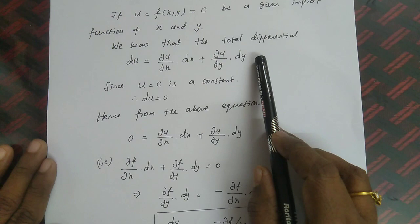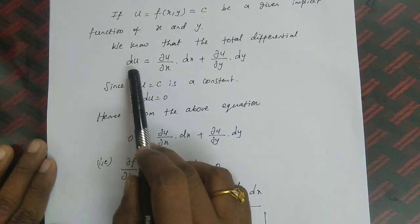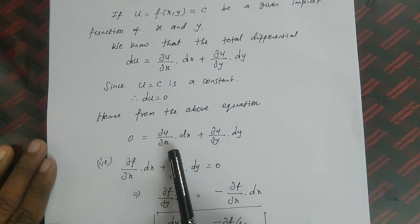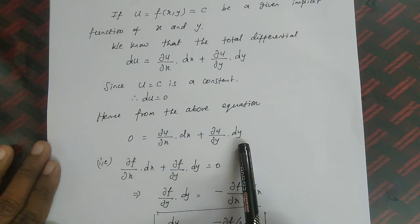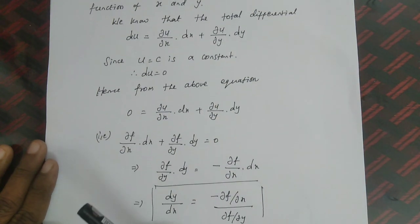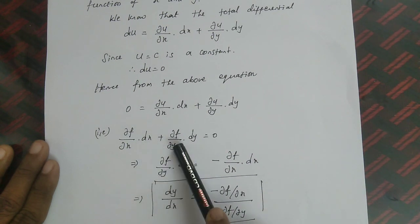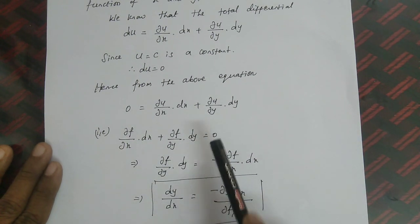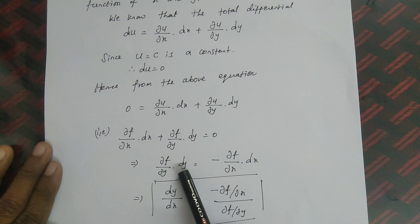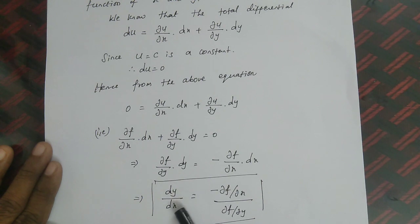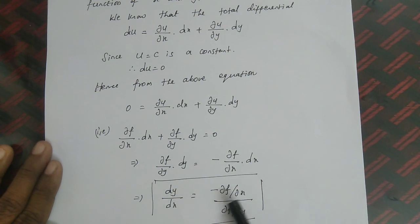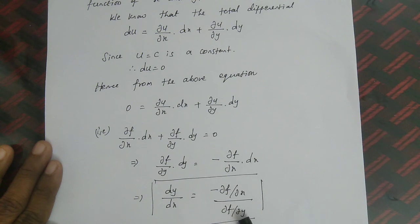Hence from the above equation, du = 0 = (∂u/∂x)dx + (∂u/∂y)dy, that is (∂f/∂x)dx + (∂f/∂y)dy = 0, which implies (∂f/∂y)dy = -(∂f/∂x)dx, that is dy/dx = -(∂f/∂x) / (∂f/∂y).